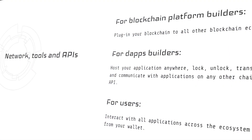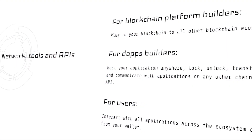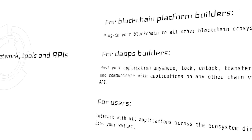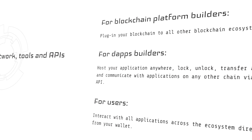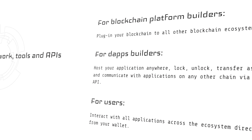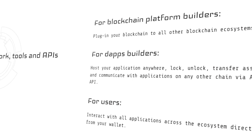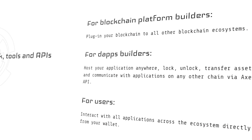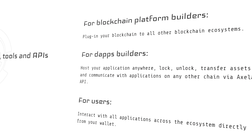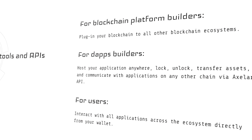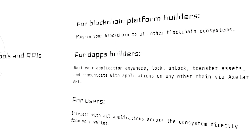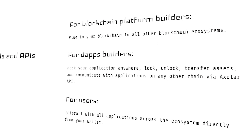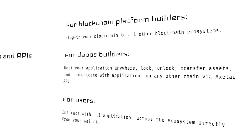Axelor Network offers the following advantages for blockchain platform builders: the ability to easily plug in their blockchains to all other blockchain ecosystems. Only threshold accounts need to be set up on the chain to plug into the network. For DApp builders, application builders can host their DApps anywhere, log, unlock, transfer assets, and communicate with applications on any other chain via CTP API. For users, users can interact with all applications across the ecosystem directly from their wallets.